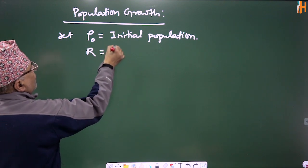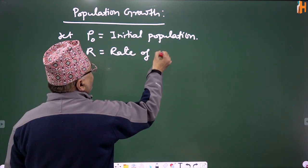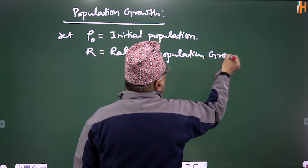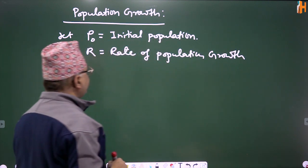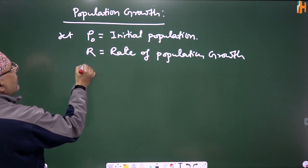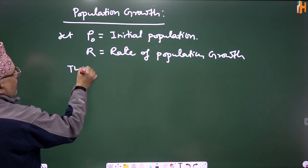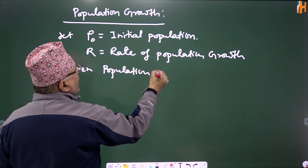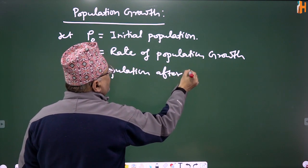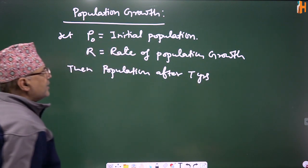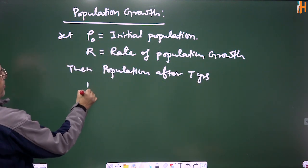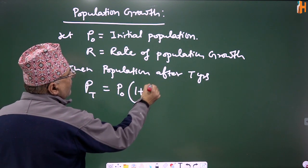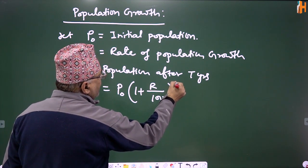R is equal to the rate of population growth. Then the population after t years, Pt, is equal to P0 into 1 plus R by 100 to the power t.